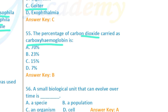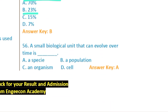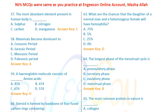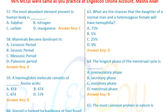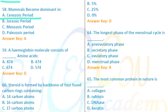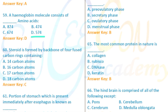Question 55: The percentage of carbon dioxide carried as carbohemoglobin is approximately 20–23%. Question 56: A small biological unit that can evolve over time — this refers to a population. Question 57: The most abundant element in the human body is oxygen. Mammals became dominant in the Cenozoic era.